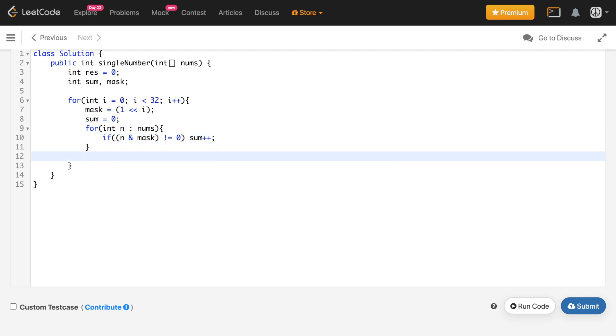And finally, after this loop is over, we will check in case this sum is not a multiple of 3, in case this is not equals to 0. So in that case, what we will do is we know that this current bit is actually set in my unique number. So what I will do is I will simply say result OR equals mask.